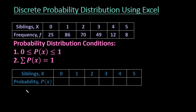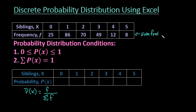The probability of x is calculated by the frequency divided by the sum of all the frequencies. So our first step when creating this is going to be to find the sum of the frequencies. Then we're going to take each of these individual values and divide it by the sum of the frequency. So the probability for the first one would be 25 divided by the sum, 86 divided by the sum, and so on.